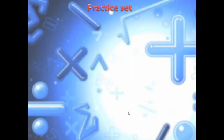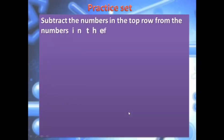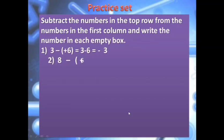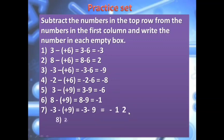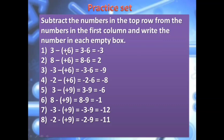Coming to the practice set — there are lots of questions for subtraction. I have solved all the answers, but please try to solve them on your own first, then check from the video. Let's look at some questions randomly. First: 3 subtracted from positive 6 — opposite of positive 6 is negative 6. So 3 minus 6 is 3, and the greater number is 6 with negative sign, so the answer is negative 3. 8 subtracted from positive 6 — opposite of positive 6 is negative 6. So 8 minus 6 is 2. Greater number is 8 having positive sign, so the answer is positive 2.